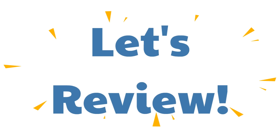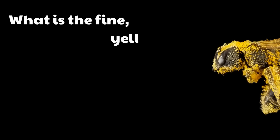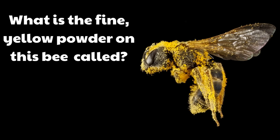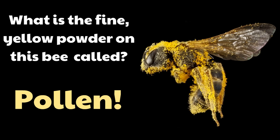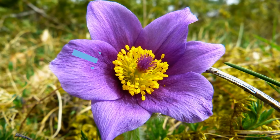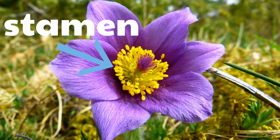Alright, let's review what we've learned today. What is the fine yellow powder on this bee called? That's right, it's pollen — pollen is a fine yellow powder. This yellow part of the flower makes pollen. Do you remember what it's called? That's right, that's the stamen. The stamen is the male part of the flower — that's the part that makes pollen.